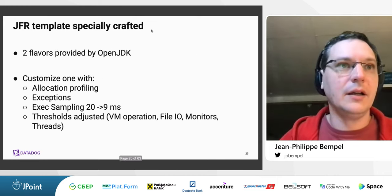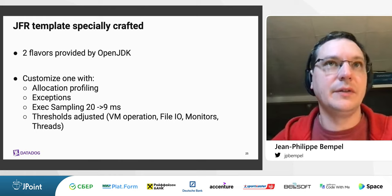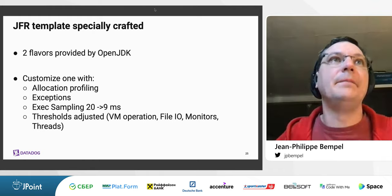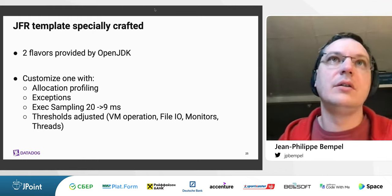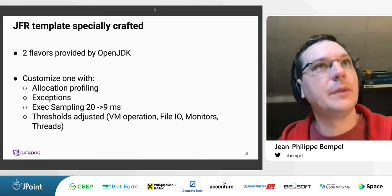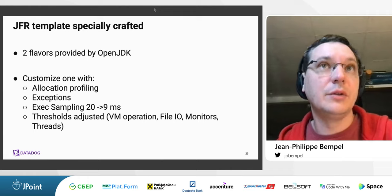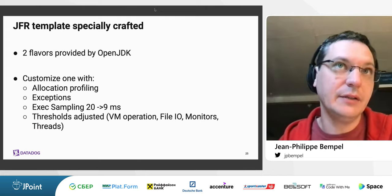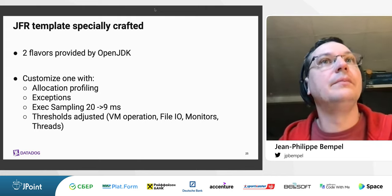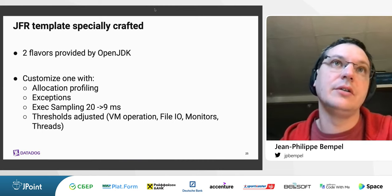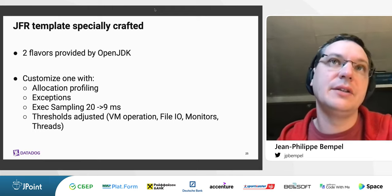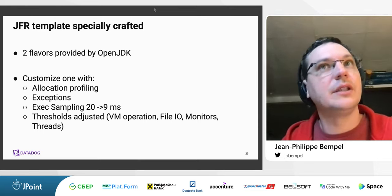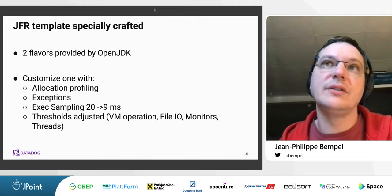The JDK bundles two event settings templates — 'default' and 'profile'. At Datadog we have specially crafted our own event settings to balance the amount of valuable information and the overhead we are willing to pay. We have activated allocation profiling and exceptions, reduced the execution sampling rate from 20ms to 9ms, and adjusted system event thresholds like VM operations, GC, locking, I/O monitors, and threads.